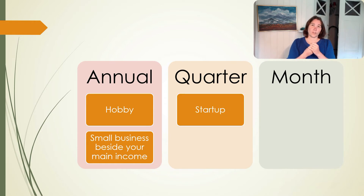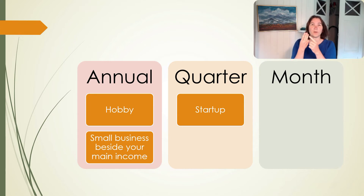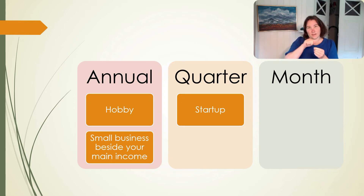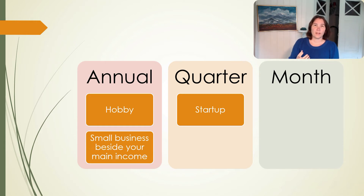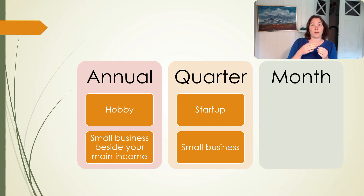If you choose quarterly, that's every third month, you need to file your VAT. For example, January, February, March — then you file your VAT the second month after that period. So for the first quarter, you would file by the 12th of May, reporting what you have bought and sold during that first quarter of the year, and it continues like that during the year. So if you have a startup company and you're not yet running like a big company, maybe quarterly is good for you, because you only need to do this administration work every third month.